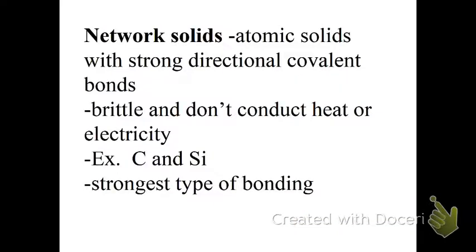That brings us to the network solids, which are atomic solids with strong directional covalent bonds. They are brittle and don't conduct heat or electricity. Also carbon and silicon show up. They are the strongest type of bonding, the covalent network solids.